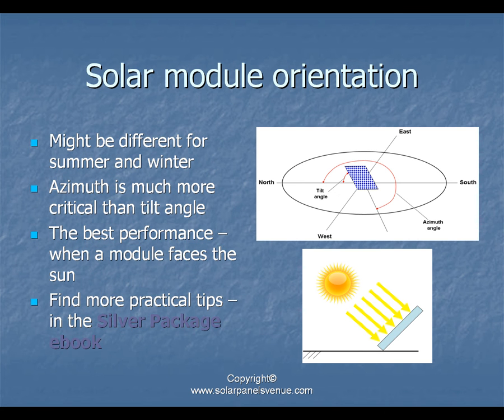Orientation is the most important factor for energy output. Optimal orientation may differ between summer and winter. Azimuth is much more critical than tilt angle. The best performance is achieved when a solar module faces directly toward the sun. More practical tips on orientation are available in the silver package ebook.